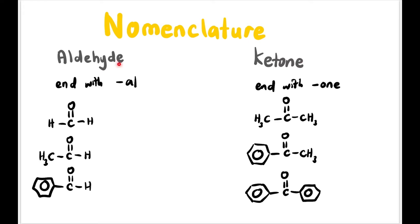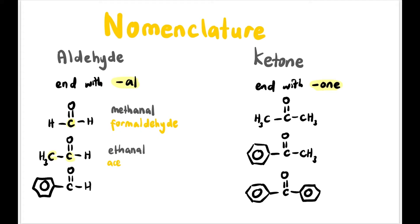Now let's learn the nomenclature of aldehyde and ketone. Basically, aldehyde's parent name ends with -AL and ketone ends with -ONE. The first example has only one carbon, so the name is methanal, and its common name is formaldehyde. Next, if it has two carbons, the name is ethanal, and its common name is acetaldehyde.